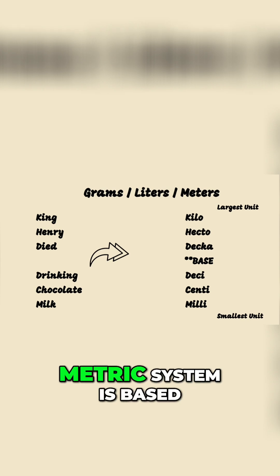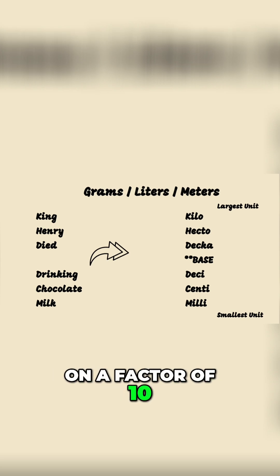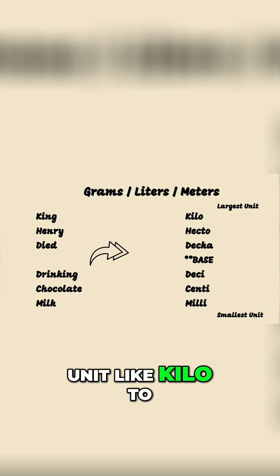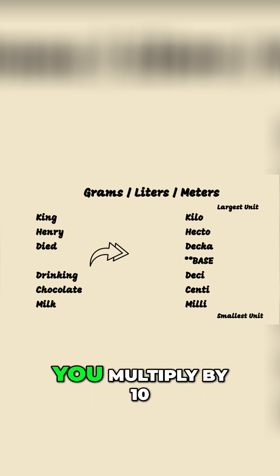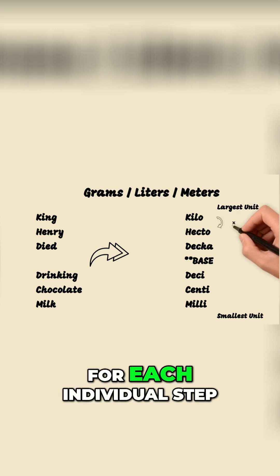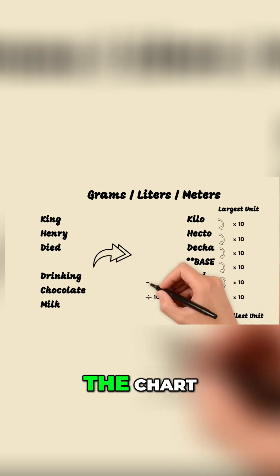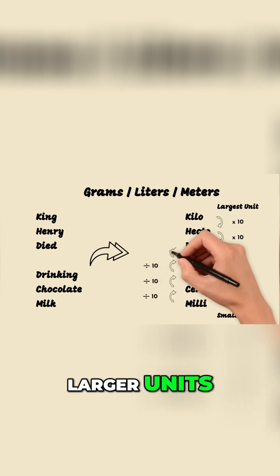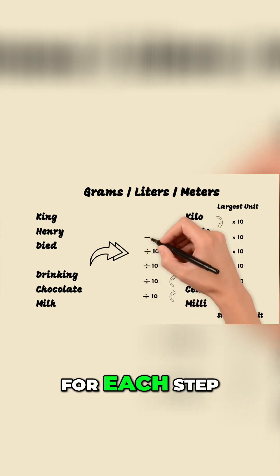Each step in the metric system is based on a factor of 10. Moving down the chart from a larger unit like kilo to a smaller unit like milli, you multiply by 10 for each individual step. On the flip side, if you're moving up the chart from smaller units to larger units, you divide by 10 for each step.